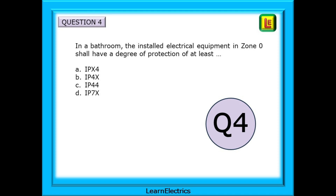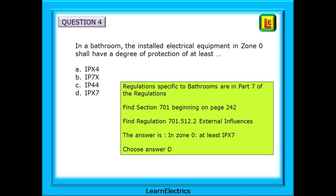Question 4: in a bathroom, the installed electrical equipment in zone 0 shall have a degree of protection of at least what? Regulations specific to bathrooms are found in part 7 in their own section. Find section 701 beginning on page 242 and then look for regulation 701.512.2 external influences. The answer is: in zone 0, at least IPX7 — choose answer D.